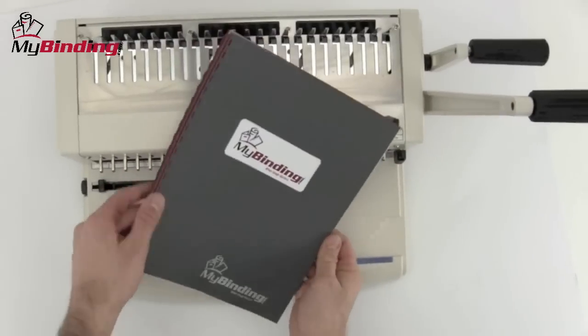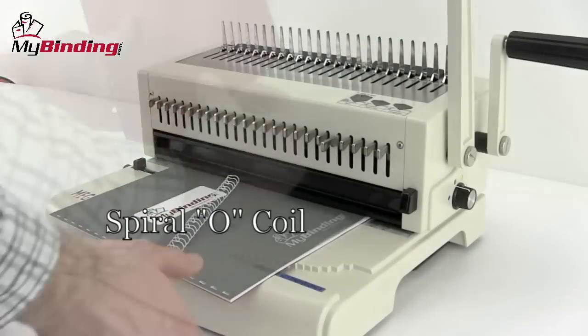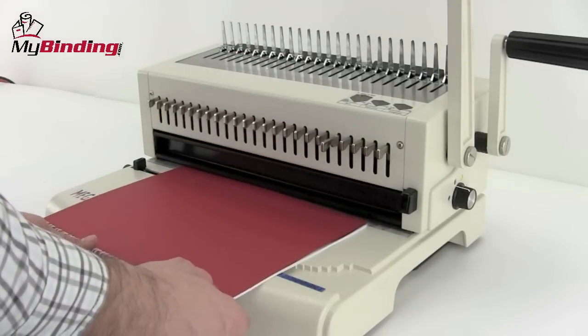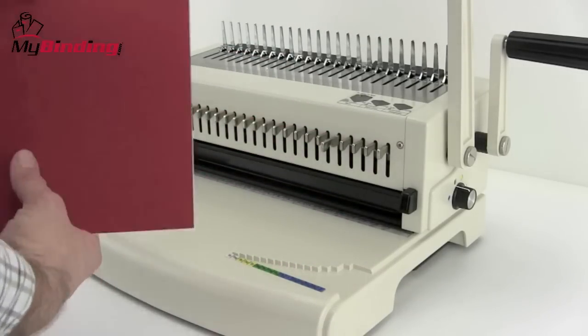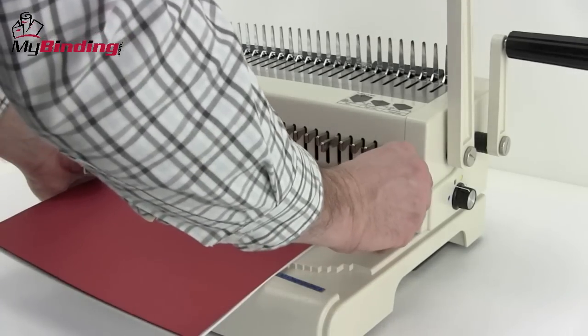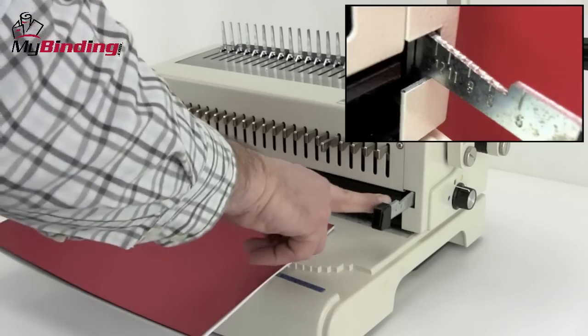That's all there is to comb binding, and now for spiral O with the same punches made, select your coil. You can use the throat of the machine to hold your project in place while you thread the coil. Turn it around and have the C of the coil facing into the machine. Place it into the groove and set your margin.